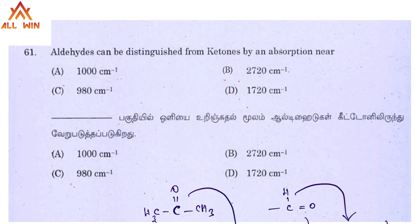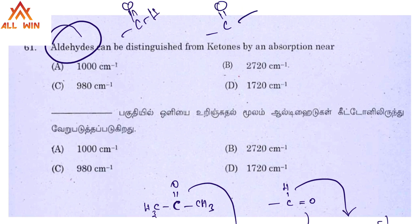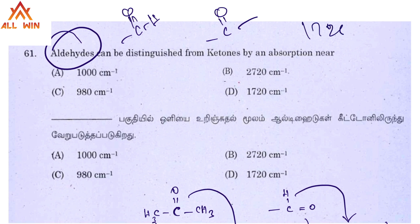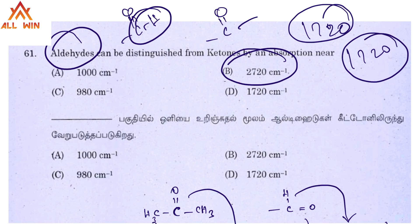Aldehydes can be distinguished from ketones by an IR absorption band. Aldehydes have a CHO group while ketones have a C=O group; both show carbonyl stretching around 1720 cm⁻¹. However, aldehydes show an additional weak absorption around 2720 cm⁻¹ due to the C-H stretch of the aldehyde group, which is not present in ketones — this is how they are distinguished.